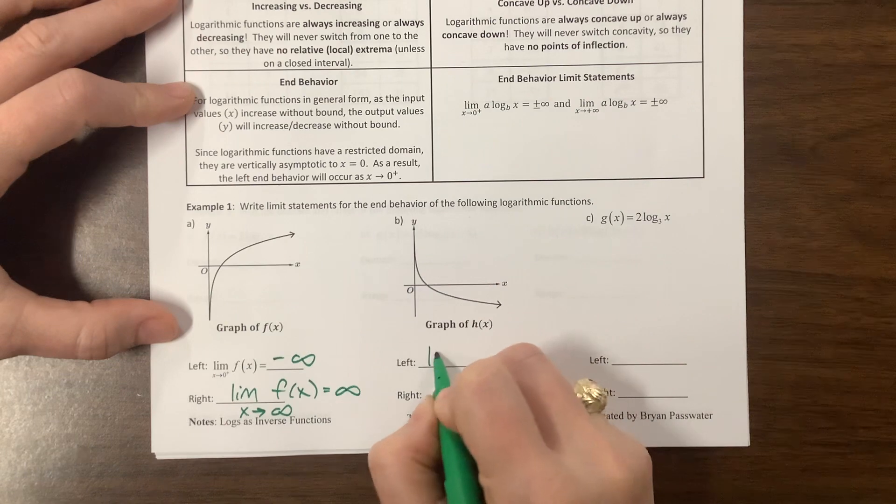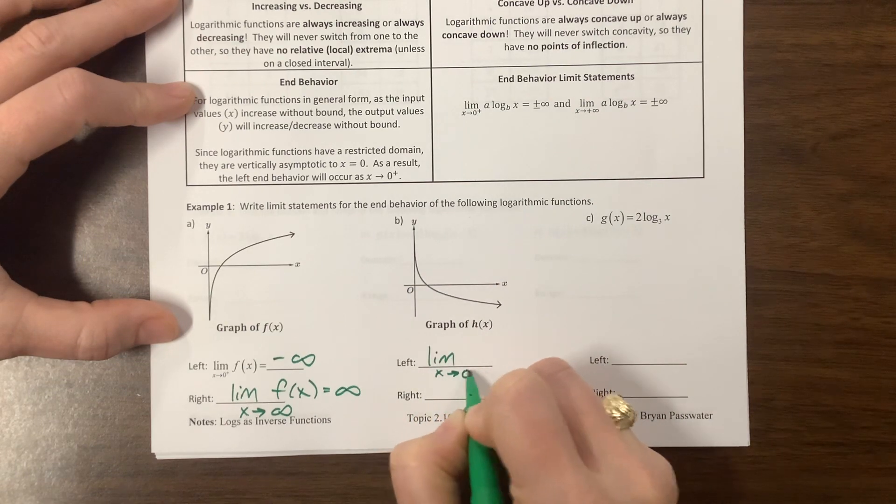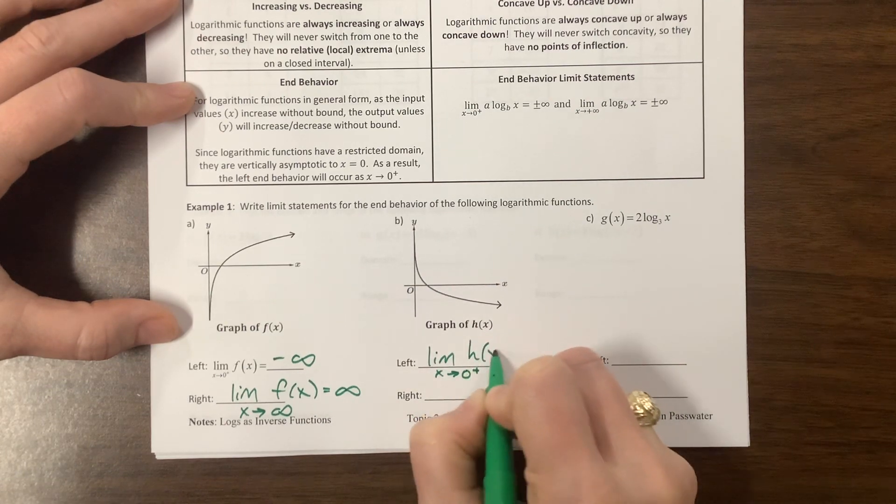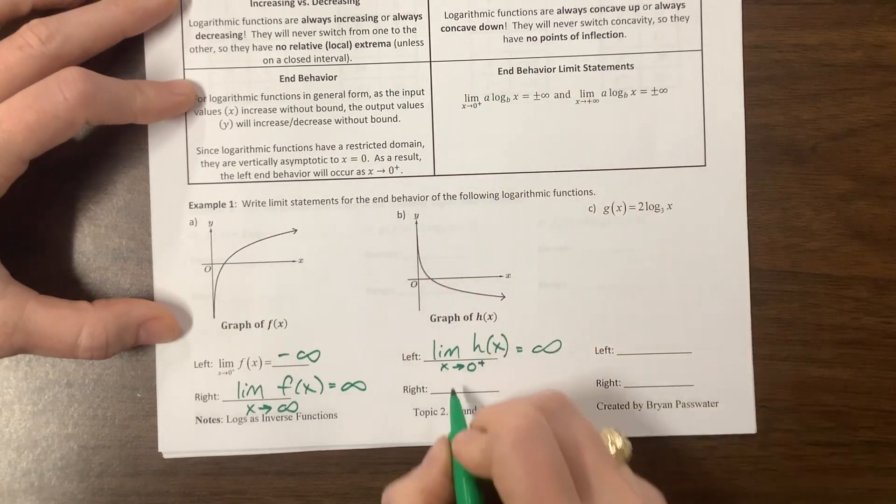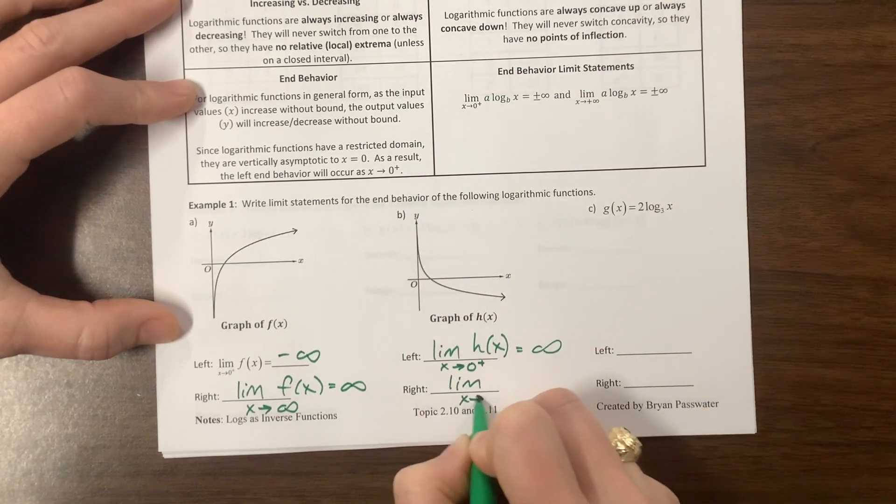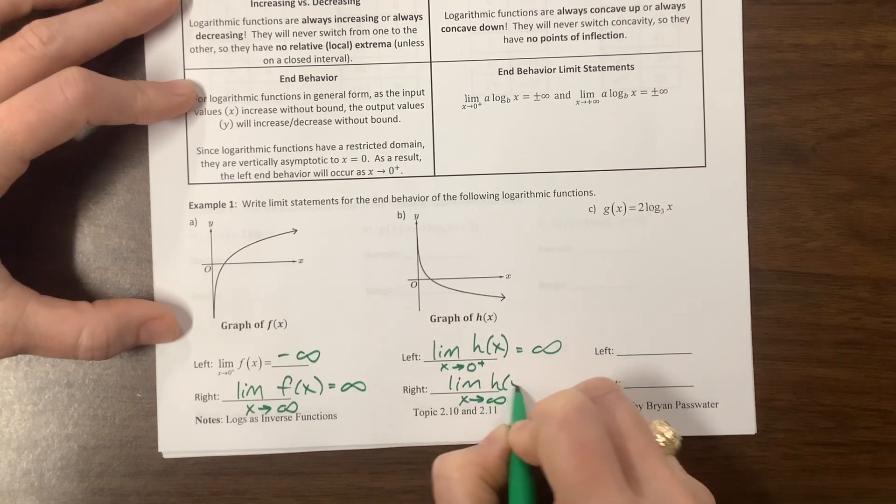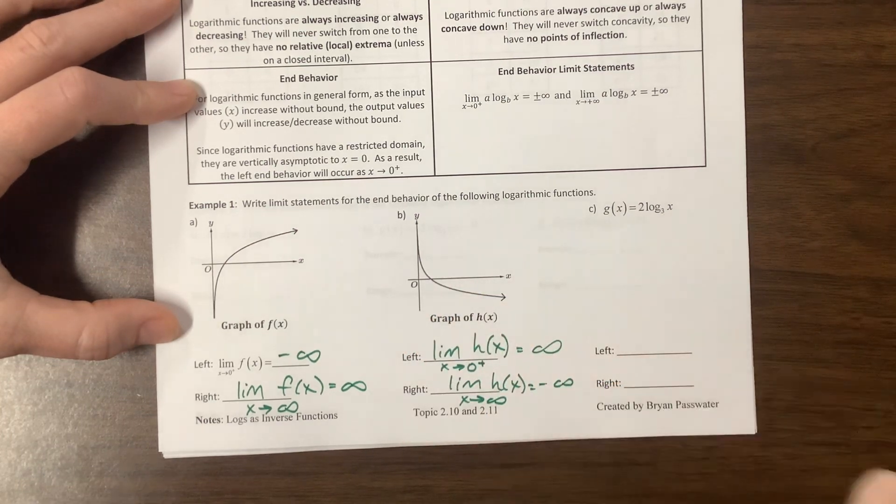The next one, from the left, the limit as x goes to zero from the right of, this is h of x. Well, what's happening as I come, I'm shooting off to positive infinity. From the right, the limit as x goes to infinity of h of x is equal to, well, we're going down to negative infinity.